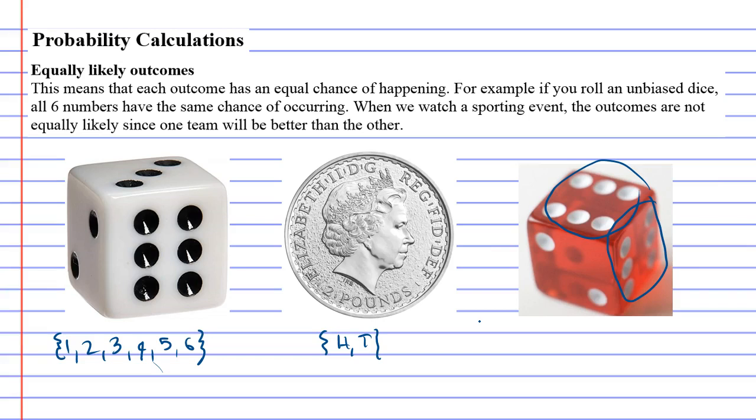Something that is in the real world, such as sporting events, horse races, and other things that we bet money on, these outcomes are not equally likely since one team might be better than another or maybe one horse is better than another.